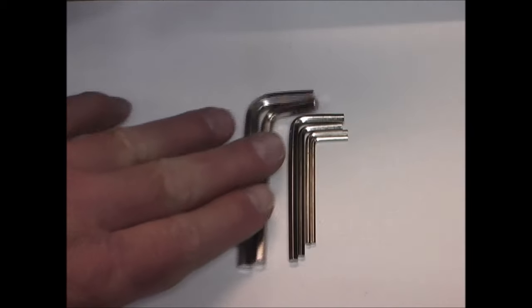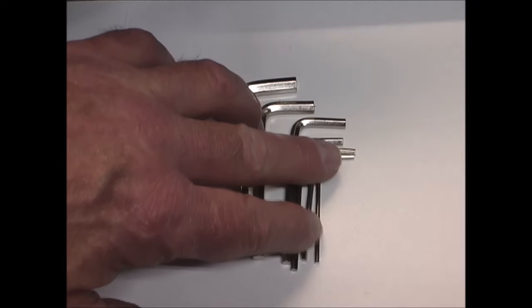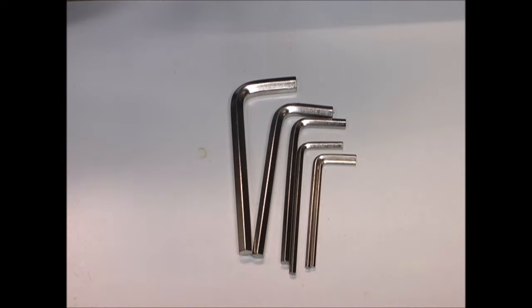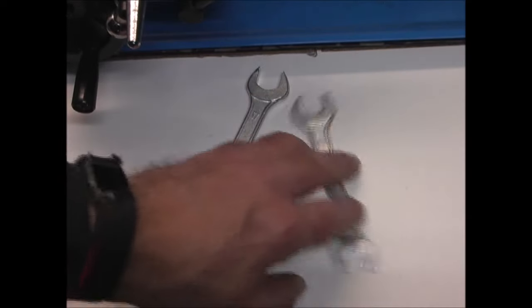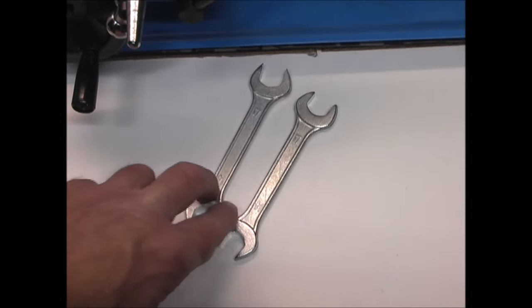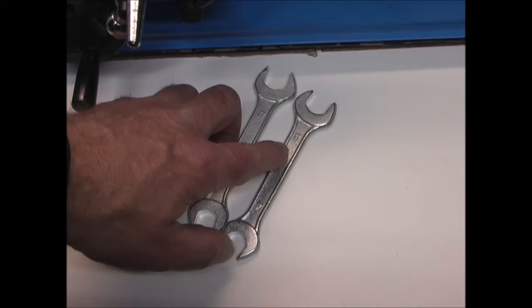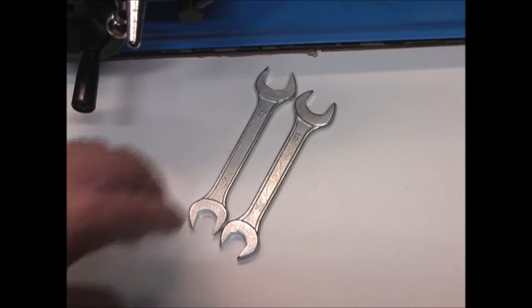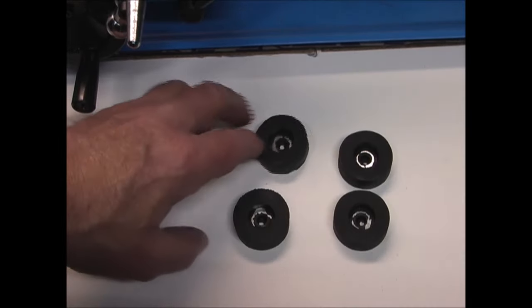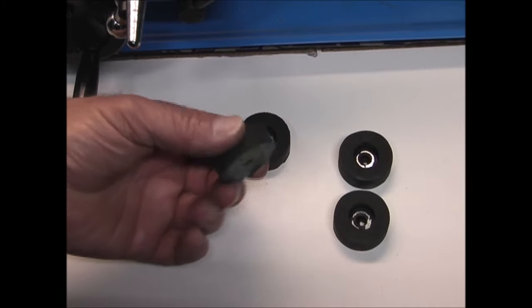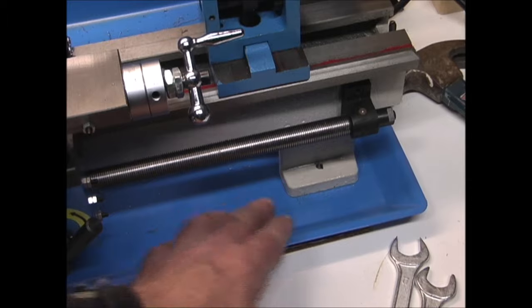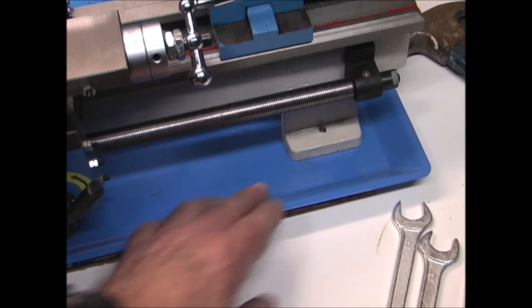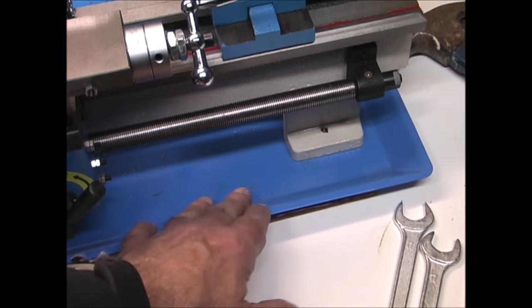There's also a set of Allen wrenches included, and a couple of open-end wrenches. Looks like they're both 14 on one end and 17mm on the other. Then there are these rubber feet, vibration dampeners, and they would go underneath this drip tray when you mount it to a bench or something.